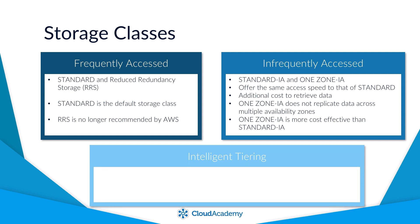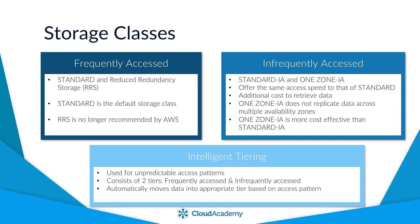We also have the Intelligent Tiering storage class, which is great for unpredictable access patterns. It optimizes your storage cost by moving data objects between two tiers — a frequently accessed tier and a more cost effective infrequent access tier — based upon usage. If data has not been accessed for 30 days or more, Intelligent Tiering will move it into the infrequent access tier. The next time the object is accessed, it will be moved back into the frequently accessed tier and the 30-day timer will be reset.